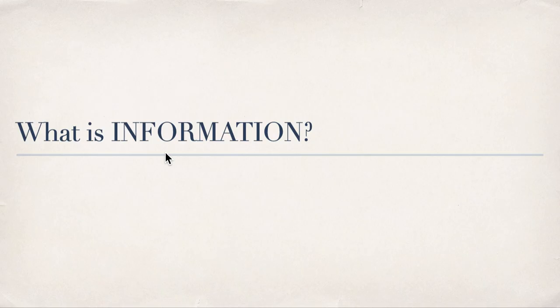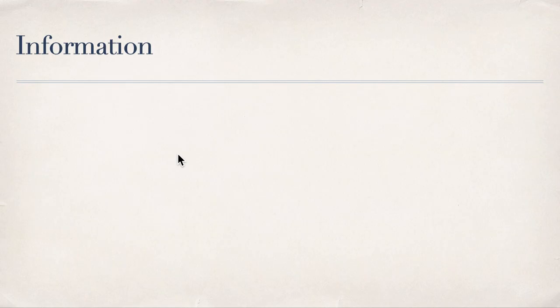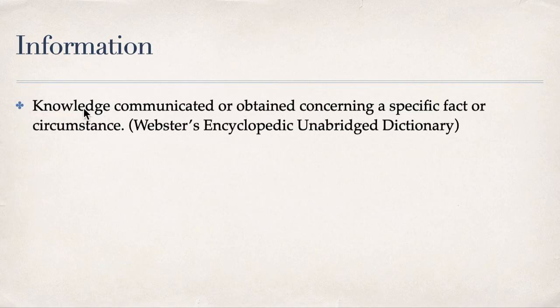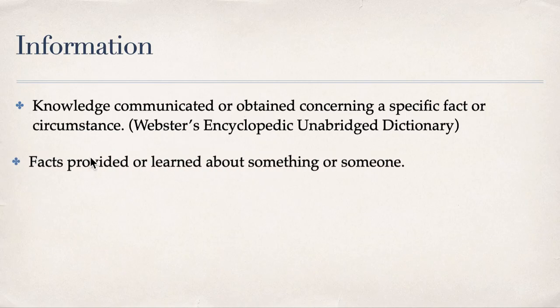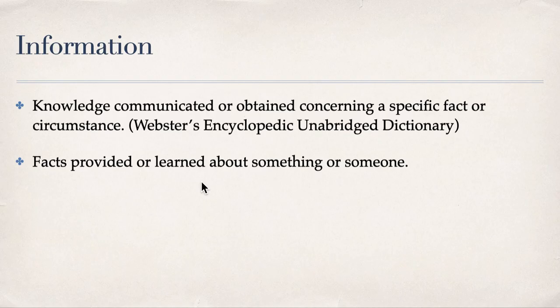So whatever you have composed of what information is, let me give you the answer. According to Webster's Encyclopedic Dictionary, information is knowledge communicated or obtained concerning a specific fact or circumstance. These are also facts provided or learned about something or someone. That's what we mean when we say information.